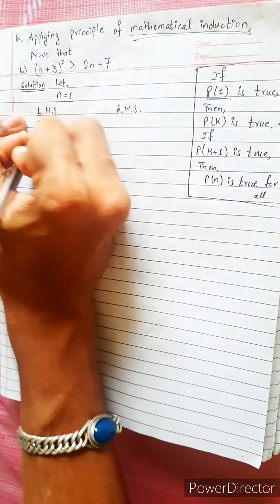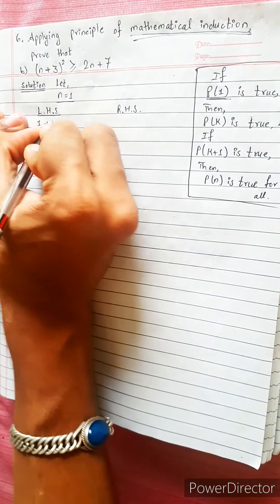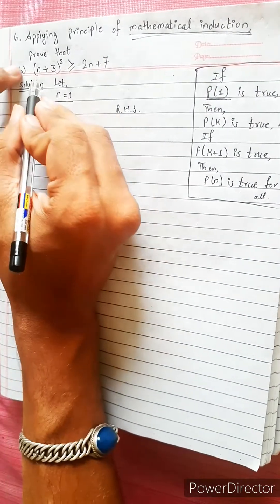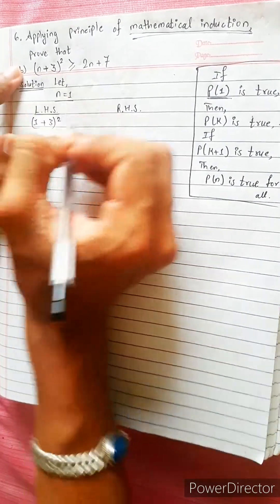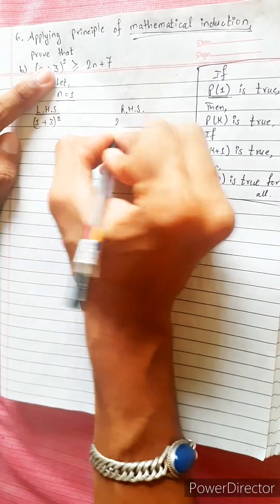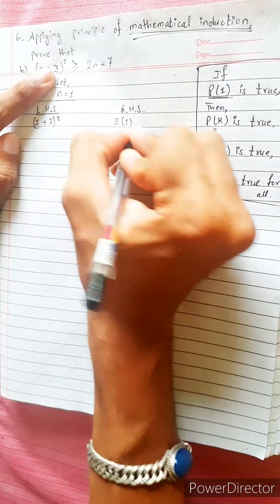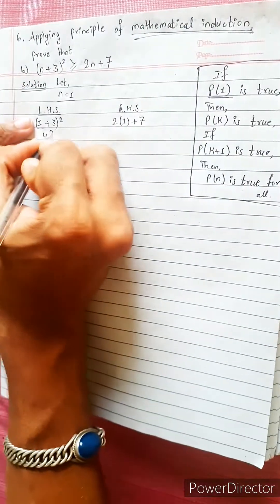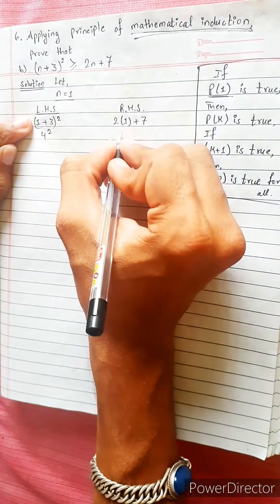LHS: 1 plus 3n plus 3 times 2 into 1 plus 7. That gives 4 squared equals 9.